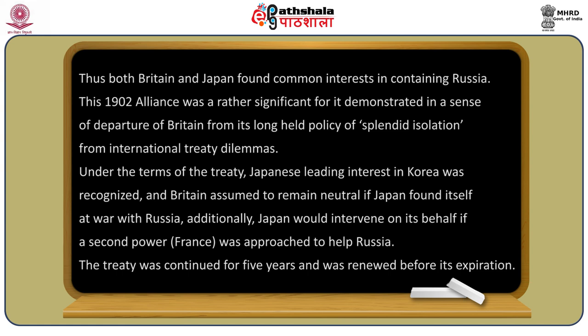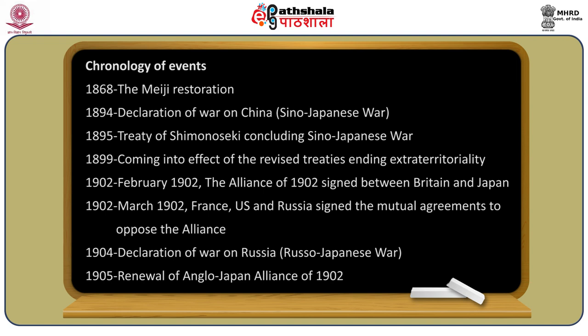Under the terms of the treaty, Japan's leading interest in Korea was recognized, and Britain agreed to remain neutral if Japan found itself at war with Russia. Additionally, Japan would intervene on Britain's behalf if a second power — France — was approached to help Russia. The treaty was continued for five years and was renewed before its expiration.